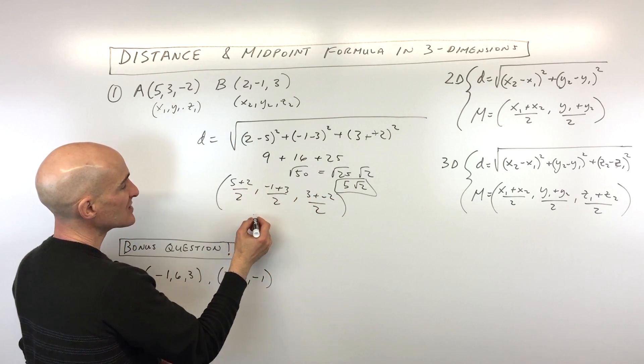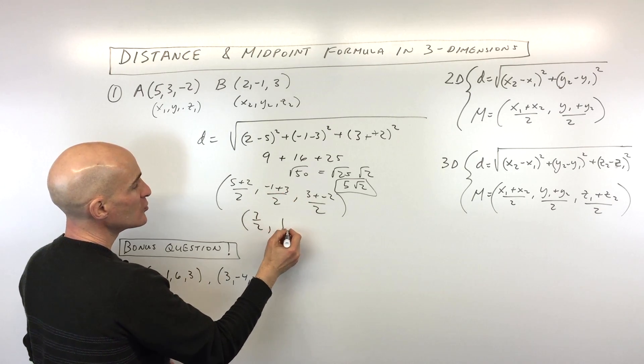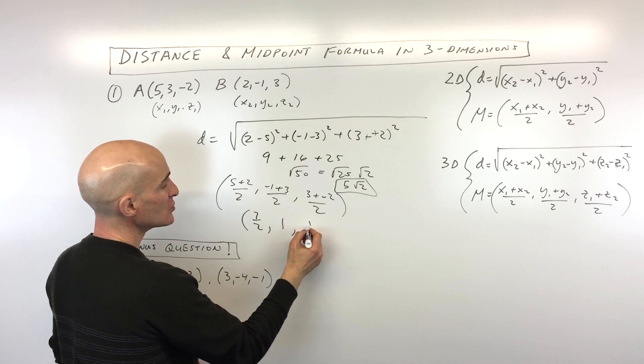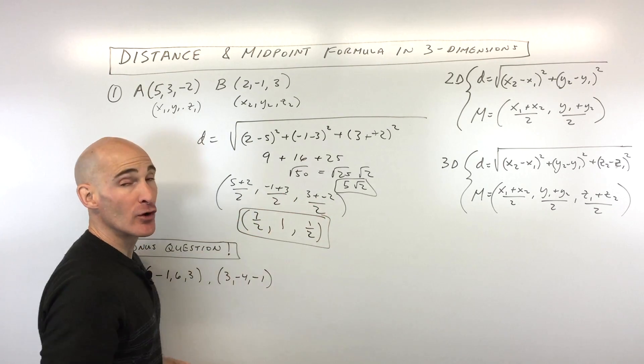So if we simplify, this comes out to 7/2, this comes out to 2/2 which is 1, and this comes out to 1/2, and that's gonna be the midpoint.